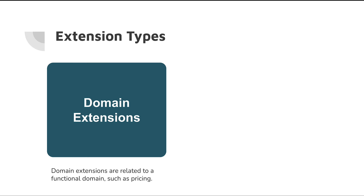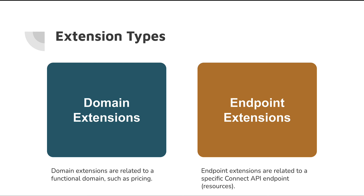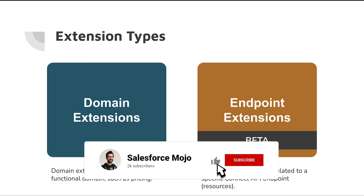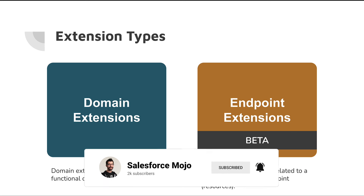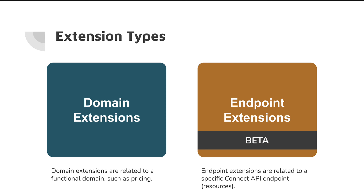Let's start by breaking down the different types of extensions. The first one, which we're primarily dealing with today, is called domain extensions. Domain extensions relate to specific functional domains or areas such as pricing, promotions, taxes, etc. Second, we have endpoint extensions — we're not going to cover these in much detail because they're in beta, but in short, this is where you can override the default API functionality of the Connect API and do whatever you want inside of it, which holds a lot of potential.